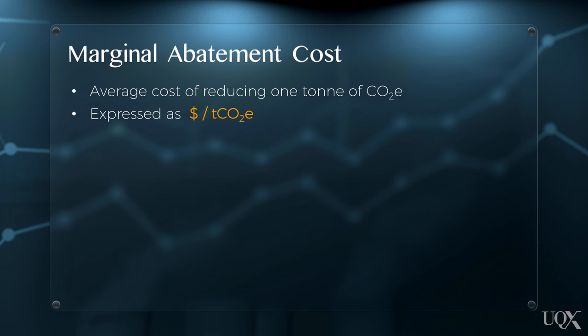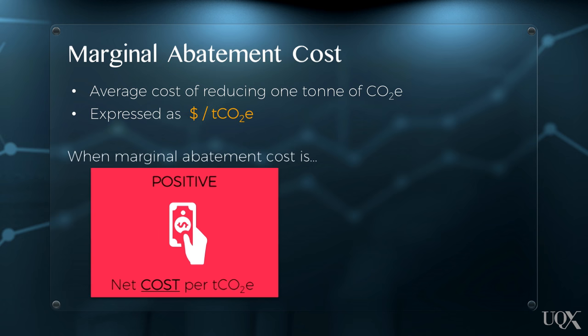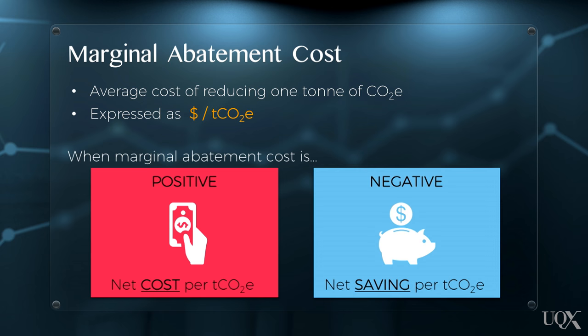This is defined as the average cost of reducing one tonne of carbon dioxide equivalent, expressed in dollars per tonne of CO2 equivalent. Importantly, when the marginal cost is positive, the cost to the company will be that amount per tonne of CO2 equivalent reduced. When marginal cost is negative, however, it means the company is saving that amount per tonne of CO2 equivalent reduced. A negative marginal abatement cost is therefore considered a cost saving.